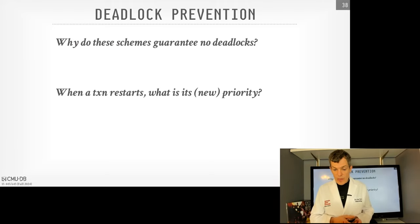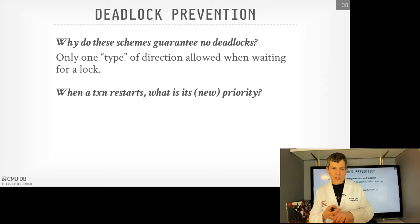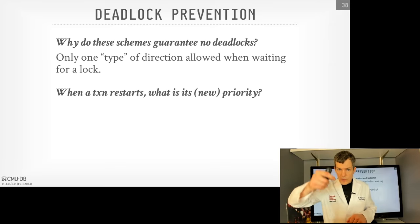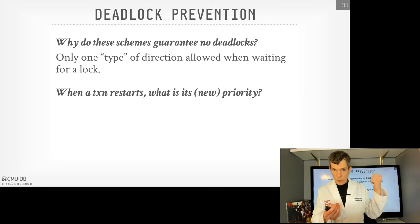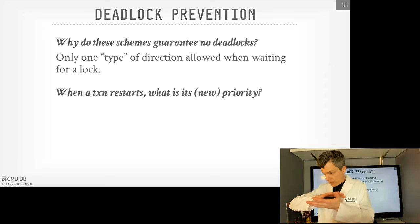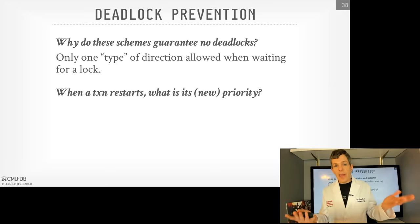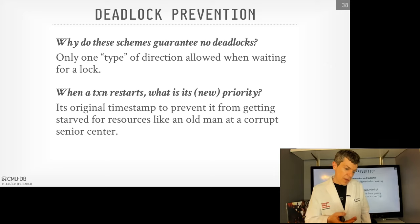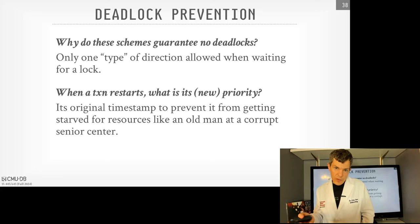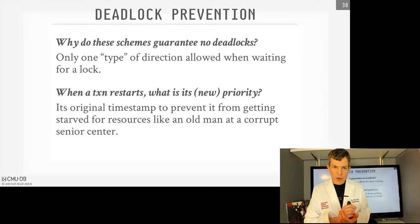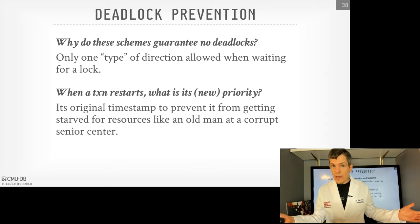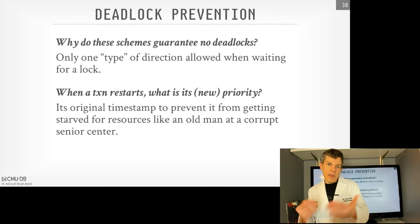Why do these protocols guarantee no deadlocks? Since all waits go in one direction (older waiting for younger in wait-and-die, or younger waiting for older in wound-wait), there can't be a cycle. When a transaction restarts after being aborted, it keeps its original timestamp — this prevents it from being killed over and over again. Eventually it becomes the oldest transaction in the system, and depending on the protocol, it will be able to acquire locks without being aborted again.